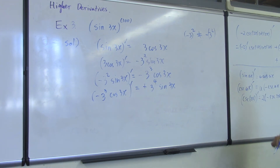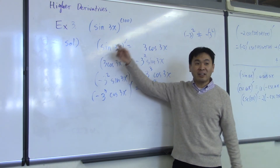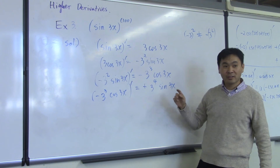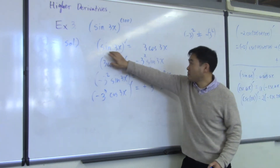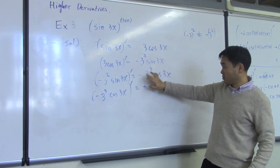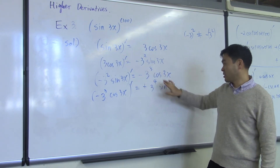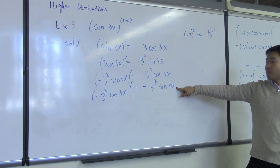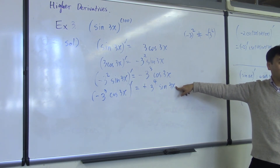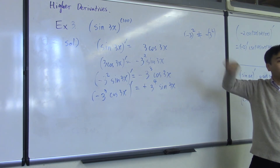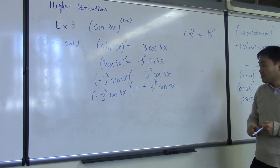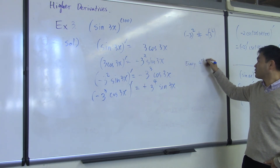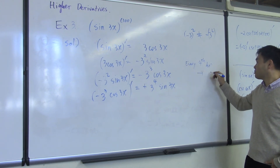Do you see a pattern here? Just look at the trig functions only: sine, cosine, negative sine, negative cosine, sine. Sine differentiates to cosine, cosine differentiates to negative sine, negative sine differentiates to negative cosine, and negative cosine comes back to sine. So if you differentiate 4 times — the 4th derivative — you come back to the sine. Every 4th derivative, you get positive sine.